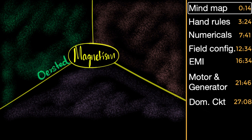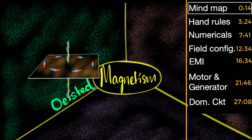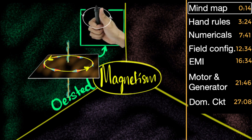The first one is by Oersted. He discovered that current carrying wires can deflect magnetic needles — in other words, they can produce magnetic fields. This is what laid the foundation for the magnetic effects due to electric current. To remember in what direction the magnetic field is going to be, you can use your right hand thumb rule or the right hand clasp rule. We'll talk about its details a little later.